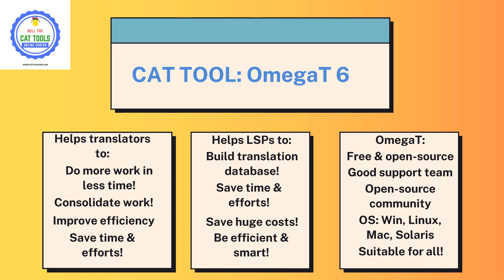For example, it helps translators do more work in less time. If a translator spends eight hours to complete a 2000-word translation, using a CAT tool allows them to do it in less time. It also allows consolidation of monthly or yearly work. All translation done through a CAT tool is saved in a translation memory, helping to improve efficiency, consistency, and reducing typing effort and time.